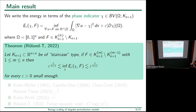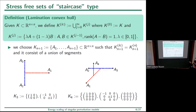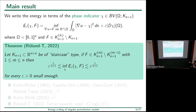This is our main result: in n dimensions, given our staircase-type set and an affine boundary condition of order exactly m — not m minus one, but exactly m — then the scaling behavior is determined by this order m. Depending on the order m of the boundary datum f, we have a different scaling behavior: epsilon to the power determined by m.